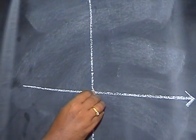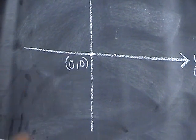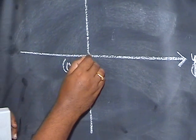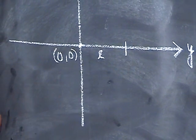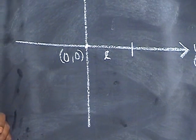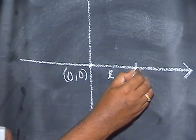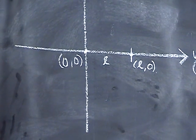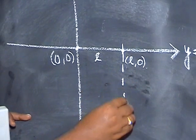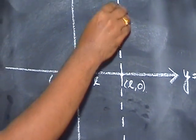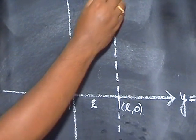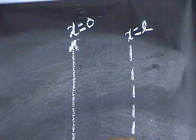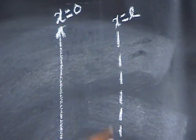Therefore, this is the origin (0, 0). Now, I am going to take a length L units on the right side, the positive side of the quadrant. So, this point will be L distance from the origin, which is (L, 0). If I draw the line, this line will be represented by the equation X is equal to L. This is X equal to 0, this is L distance, therefore this line is X equal to L.